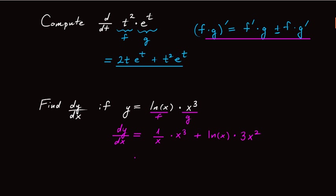This can be simplified a little bit: x cubed divided by x is the same as x squared, plus 3x squared times ln of x. But in either case, these are both equivalent answers. Let's look at two more examples.